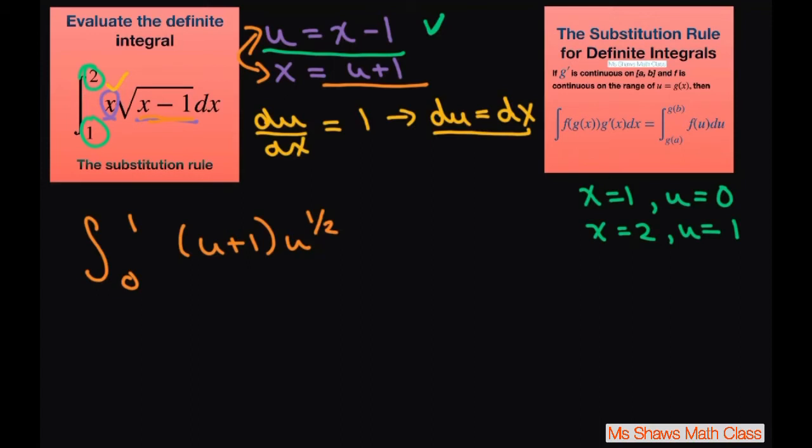I'm going to go ahead and distribute this u to the 1 half. So we have 0 to 1 and that's going to be, if you add 1 and 1 half, that's going to be u to the 3 halves plus u to the 1 half.